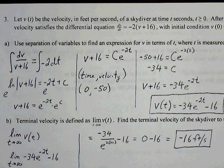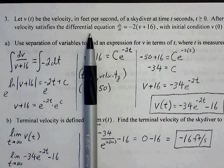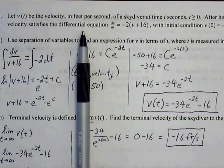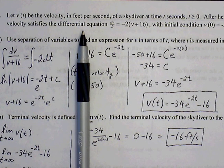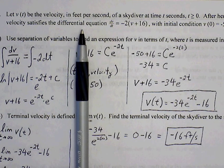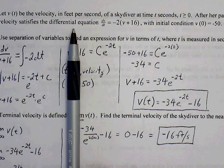This is the back page of the Chapter 5 and 6 test review. Number 3, let v(t) be the velocity in feet per second of a skydiver at time t seconds, where t is greater than or equal to 0. After her parachute opens, her velocity satisfies the differential equation dv/dt equals negative 2 times (v plus 16), with an initial condition of v(0) equals negative 50.